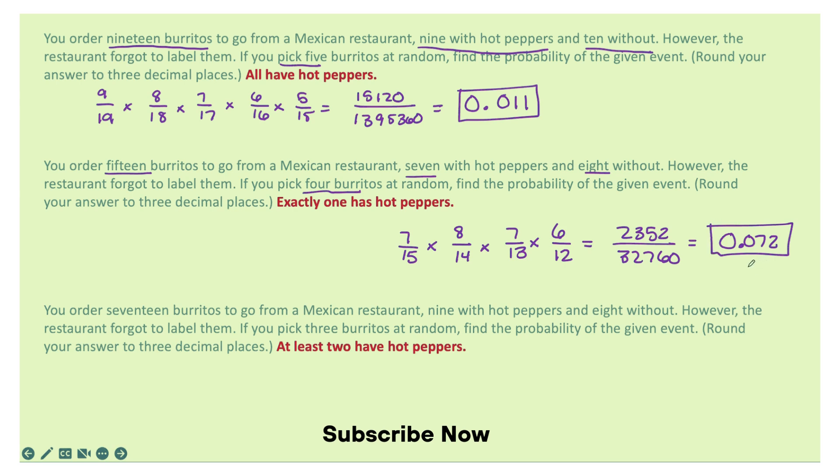Rounded to the nearest three decimal places. For the last one, you order 17 burritos to go from a Mexican restaurant, 9 with hot peppers, 8 without. However, the restaurant forgot to label them. If you pick 3 burritos at random, find the probability of the given event.